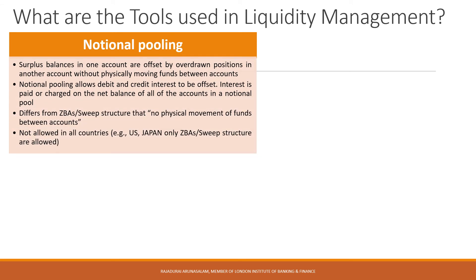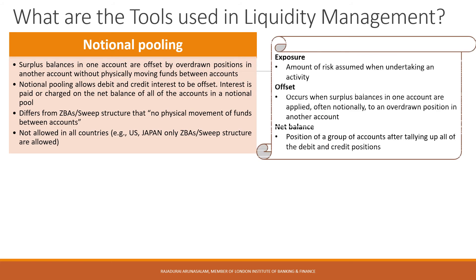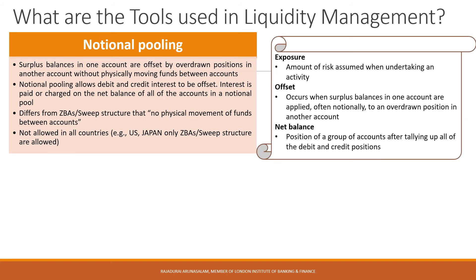Another tool is called Notional Pooling. Notional Pooling differs from ZBAs and sweep structures in that there is no physical movement of funds between accounts — in other words, there is no payment component associated with Notional Pooling. It is purely a liquidity management tool. However, Notional Pooling allows companies to use their funds more effectively, which has a direct impact on the way payments are made. The primary reason a corporate would engage in Notional Pooling is to take advantage of surplus balances in one account, offsetting them against an overdraft position in another account. In other words, Notional Pooling allows debit and credit interest to be offset.